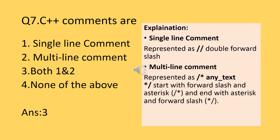Question number seven: what are C++ comments? C++ comments can be single-line or multi-line. Single-line comments always use double forward slash (//), and multi-line comments use forward slash asterisk (/* ... */). If you need to explain code, variables, methods, classes, or functions, the programmer uses comments so the user can understand the code. When the program is compiled, the compiler ignores the comment section. The answer is option 3: both single-line and multi-line.